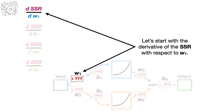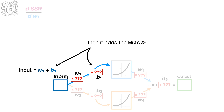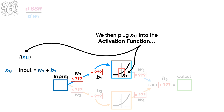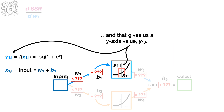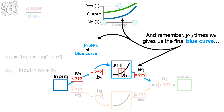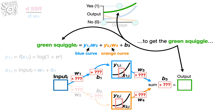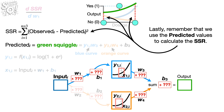Let's start with the derivative of the sum of the squared residuals with respect to W sub 1. Remember, the neural network starts by multiplying input sub i by W sub 1, then adds the bias B sub 1, and that gives us an x-axis coordinate for the activation function that we call x sub 1 comma i. We then plug x sub 1 comma i into the softplus activation function, giving us a y-axis value of y sub 1 comma i. And y sub 1 comma i times W sub 3 gives us the final blue curve, which we add to the final orange curve and bias B sub 3 to get the green squiggle and the predicted values. Lastly, we use the predicted values to calculate the sum of the squared residuals.